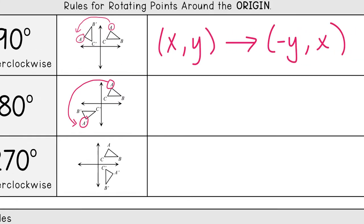So for this one, the rule is if your pre-image is (x, y), your image is going to be (-x, -y). So in this case, you don't have to switch anything. All you're doing is changing the signs.